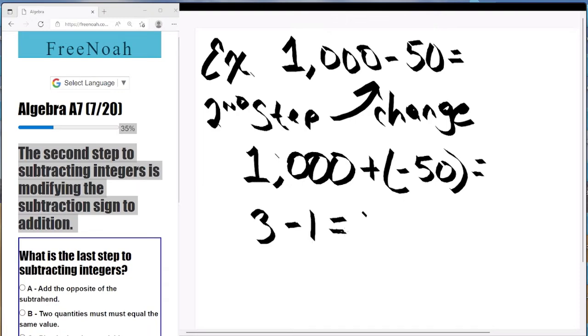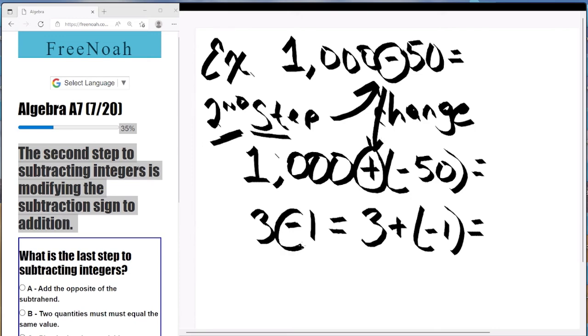Here we go. One more example here. 3 minus 1 equals 3 plus negative 1. So that is the second step. It's just basically changing the subtraction sign in the original value into a positive. And the third step, I'll show you why 50 becomes negative 50, why 1 becomes negative 1.